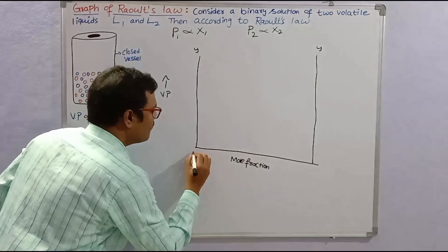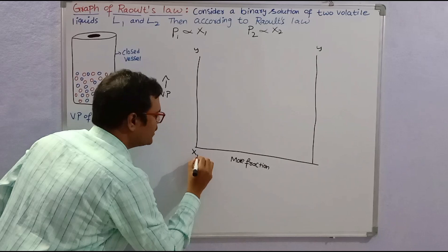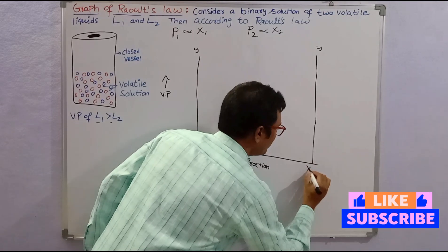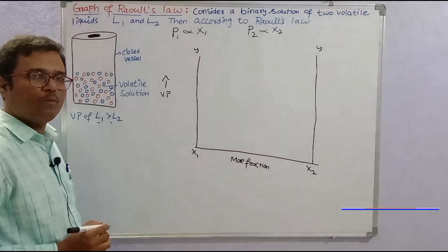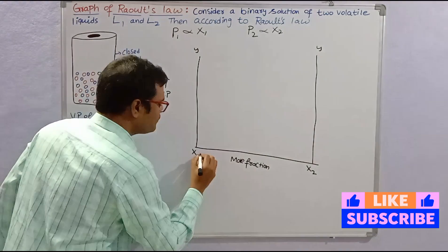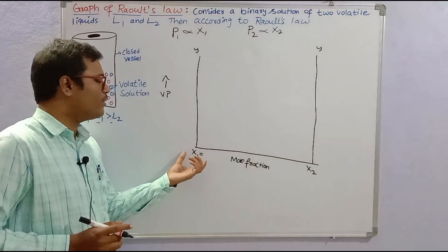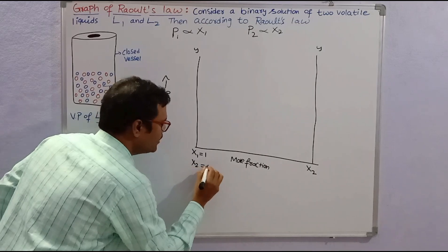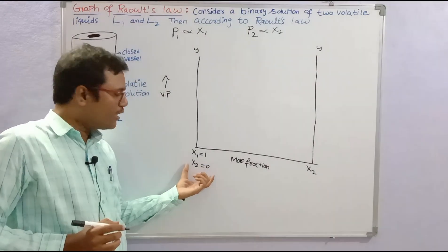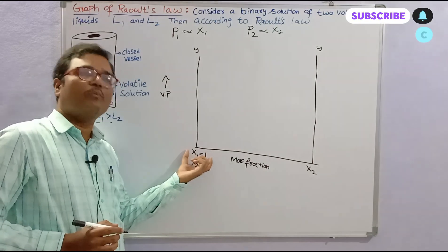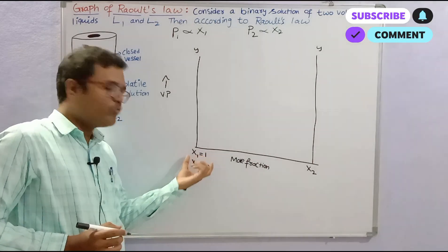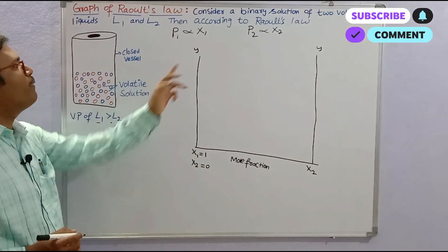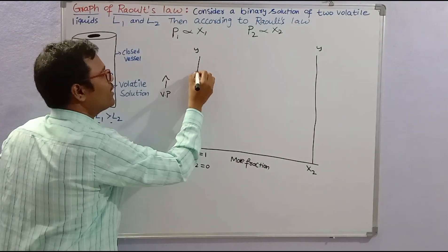On the left side we write component 1, that is liquid 1's mole fraction x1, and on the right side we write component 2's mole fraction x2. On the left side, where pure component or liquid 1 is present, x1 is equal to 1 and x2 becomes 0.